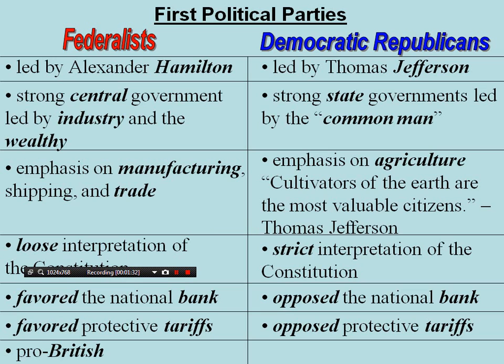The Democratic-Republicans, led by Thomas Jefferson, wanted a strong state government, led by the common man, with emphasis on agriculture. They held a strict interpretation of the Constitution, opposed the national bank, opposed protective tariffs, and were pro-French.